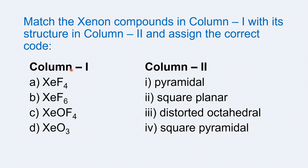We have column 1 with a set of xenon compounds and their geometries listed. The geometries can be found using VSEPR theory. But when we have compounds like these, we need to look at valence bond theory. In this video, I am going to show a simple and quick way to identify the geometry of xenon compounds.